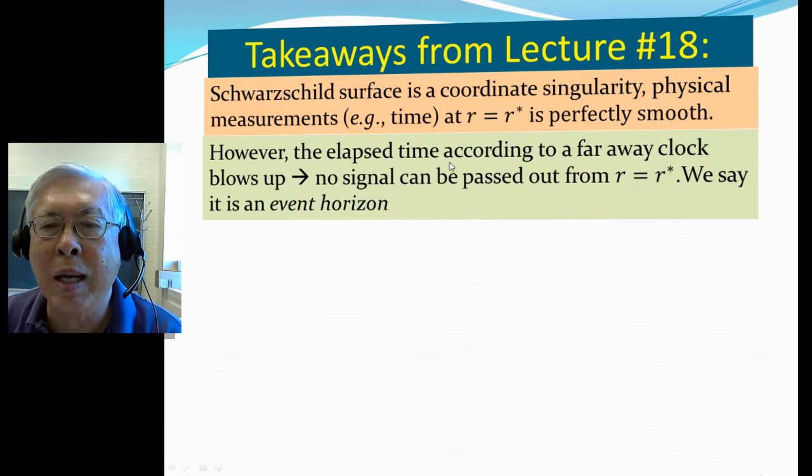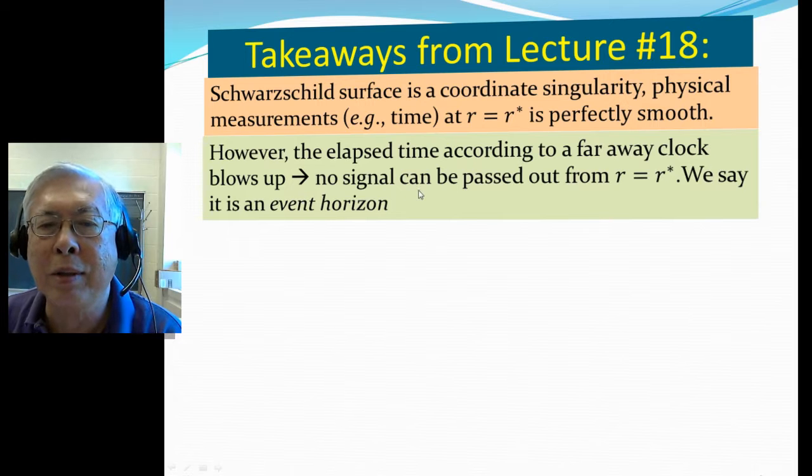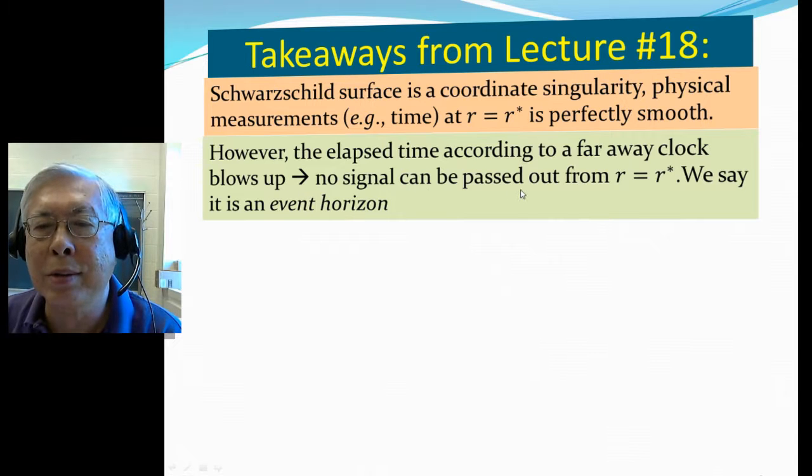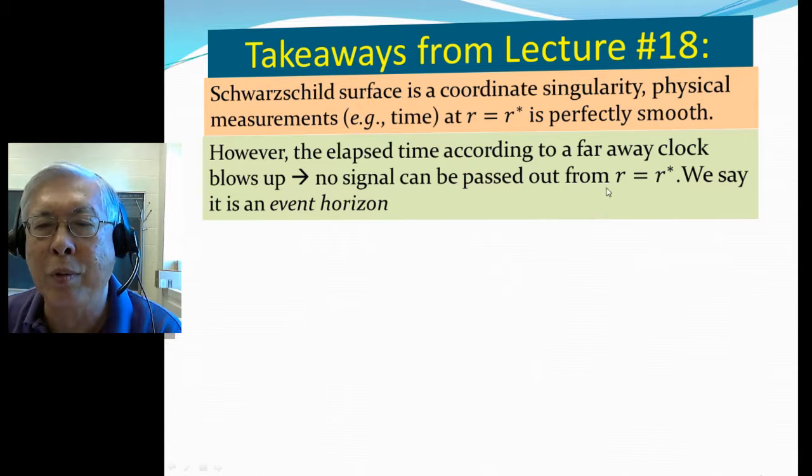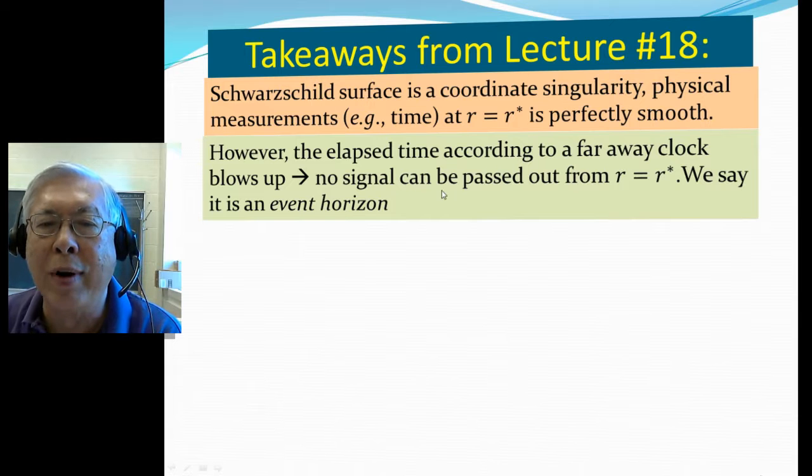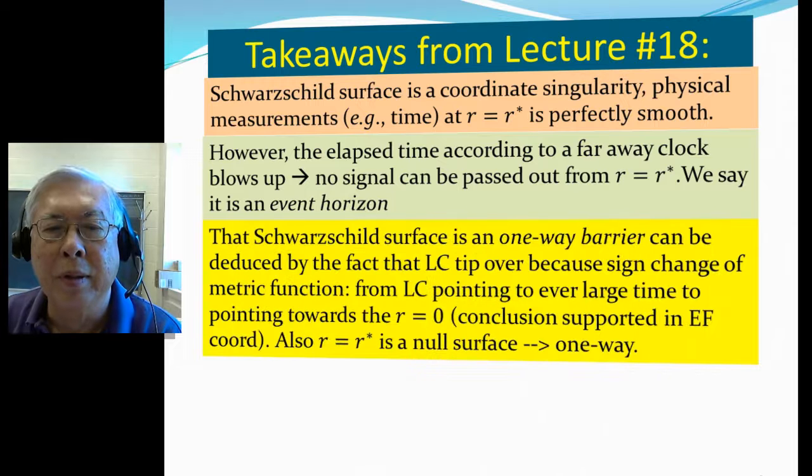However, the elapsed time, according to a faraway clock, which is usually taking a coordinate time, blows up. No signal can be passed out from the Schwarzschild surface to the faraway observer. So we said this is an event horizon. You cannot communicate beyond the event horizon. You cannot see anything beyond the event horizon.